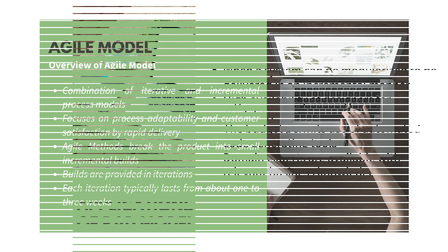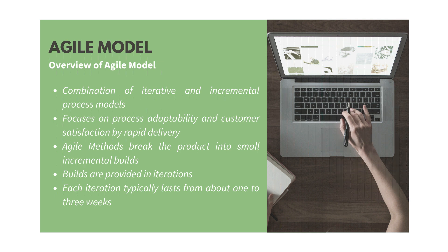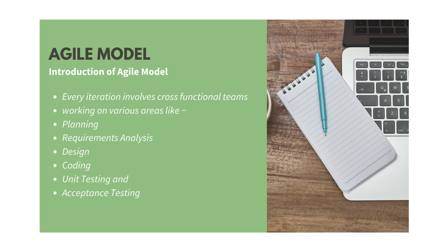Now let's see the Agile model. Agile software development lifecycle model is a combination of iterative and incremental process models. It focuses on process adaptability and customer satisfaction by rapid delivery of working software. Agile methods break the product into small incremental builds provided in iterations, each typically lasting from about one to three weeks. Every iteration involves cross-functional teams working on planning, requirement analysis, designing, programming, unit testing, and acceptance testing.